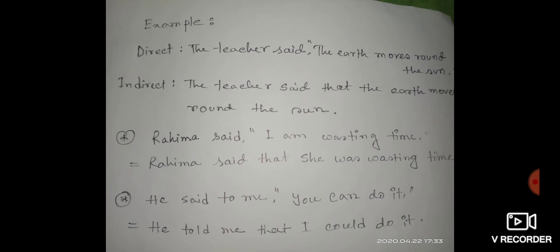The second example: 'Rohima said I am wasting time.' In indirect speech it will be 'Rohima said that she was wasting time.' Here, 'I' is the first person and it will follow the subject of the reporting verb. Rohima is third person singular and female, so we place 'she.' Rohima said that she was wasting time.